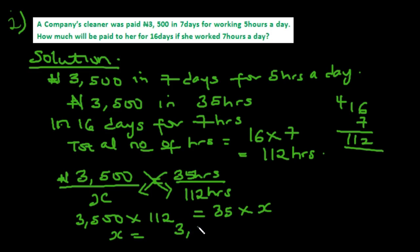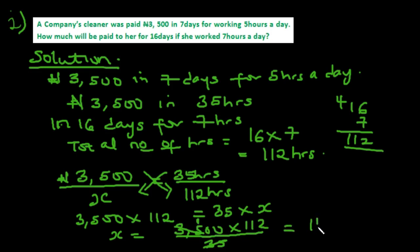We divide both sides by the coefficient of the unknown, so x equals 3,500 multiplied by 112 all over 35. The 35 cancels out, giving us 112 multiplied by 100, which equals 11,200 naira. So if she works 16 days at 7 hours a day, she should be paid 11,200 naira — the same way she was paid 3,500 for working 35 hours.